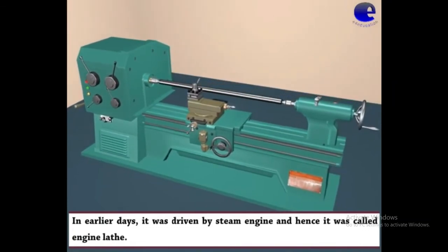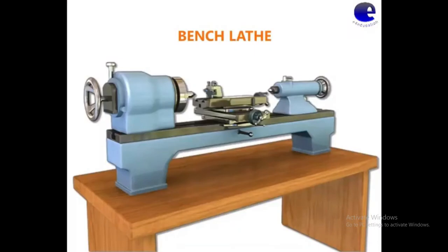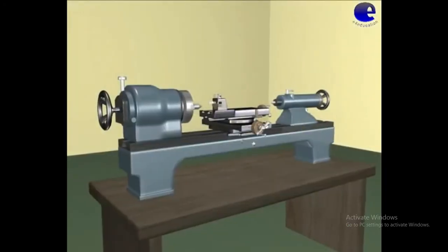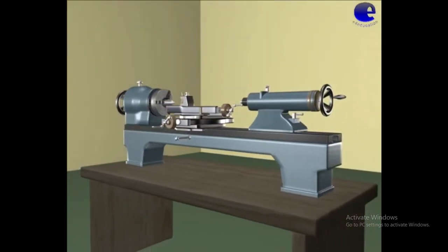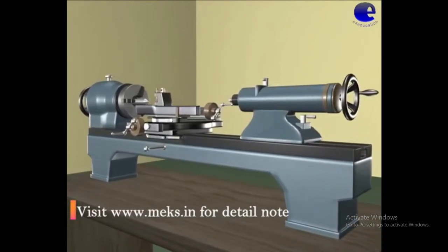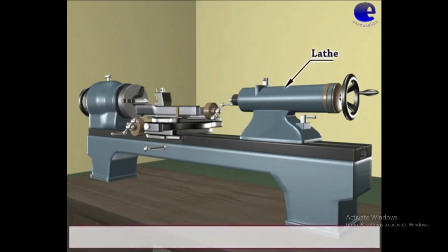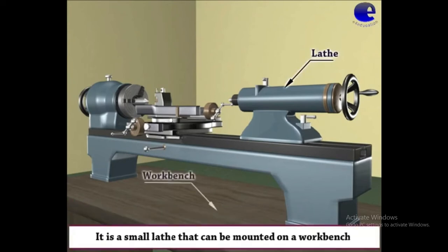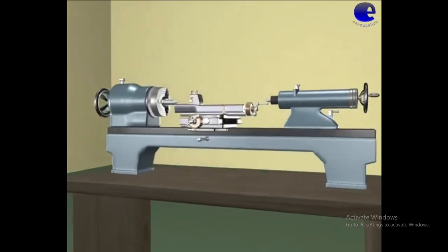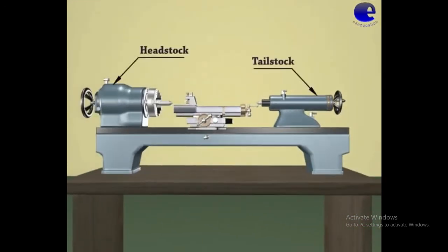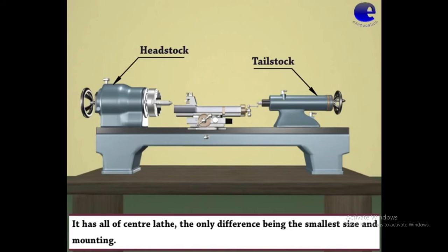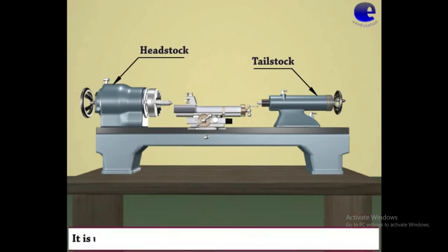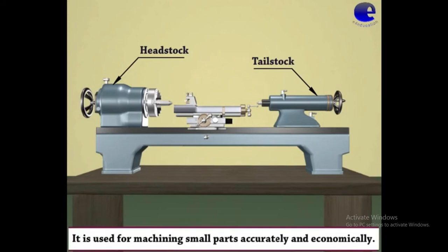Next, bench lathe — you observe the figure. This type of lathe is kept on the bench and is used for very small work and practical purposes. It has the same parts as the engine lathe — headstock, tailstock, and carriage. It is a small lathe that can be mounted on the work bench, that is why it is called bench lathe. The only difference is the small size. It is used for machining small parts accurately and economically.